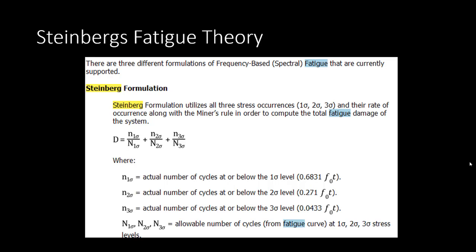To determine the fatigue life of the part we'll be using Steinberg's formulation, which is the default setting in ANSYS Mechanical. Steinberg's formulation uses all three stress occurrences — sigma 1, sigma 2, and sigma 3 — and the rate of occurrence, along with the very popular Miner's rule, in order to compute the total fatigue damage of the system.